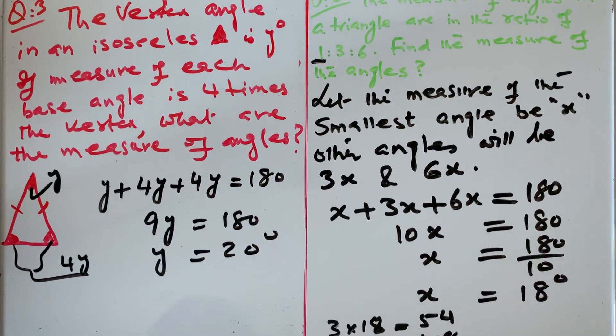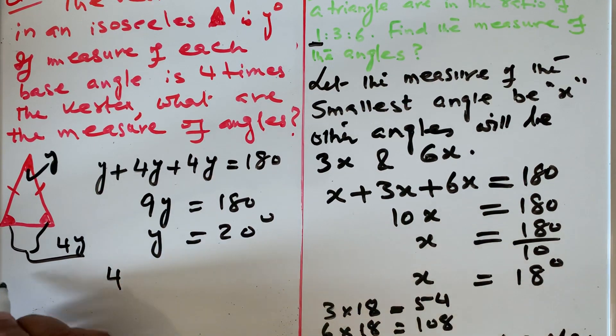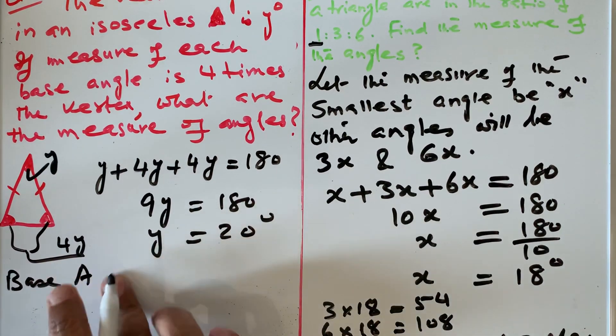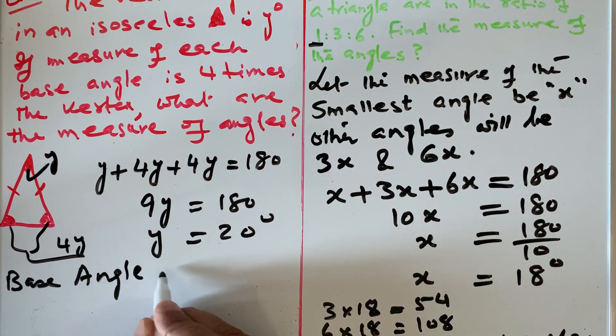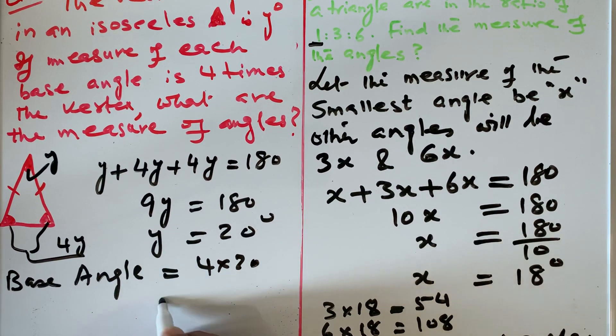So if I know my y, then I can find out my 4y. So the base angle equals 4 times 20, which equals 80.